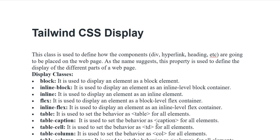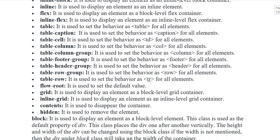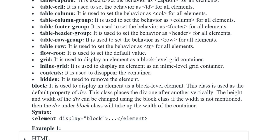Table caption — it is used to set the behavior as caption for all elements. Table cell — it is used to set the behavior of table cell for all elements. Table column — it is used to set the behavior of column for all elements. Table column group — it is used to set the behavior of column group for all elements. Table footer group — it is used to set the behavior of footer for all elements. Header group — it is used to set the behavior of header for all elements. Row group sets the behavior of row for all elements. Table row — it is used to set the behavior of tr for all elements.